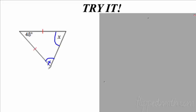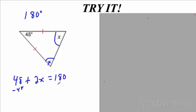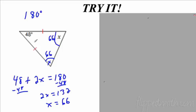Let's try it with some numbers. I see these two angles are congruent, so it's isosceles, and that means this angle equals this angle — both are x. I know that triangles add up to 180 degrees, so 48 plus x plus x equals 180. Subtracting 48 from both sides gives 2x equals 132, then dividing by two gives x equals 66. So both base angles are 66 degrees.